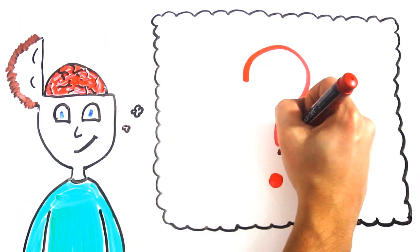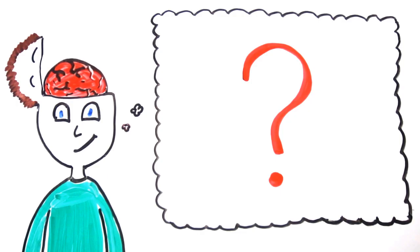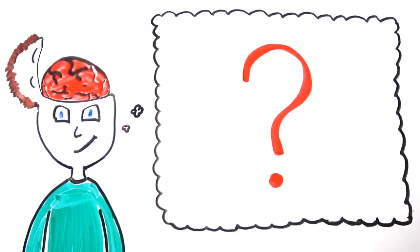But what if I told you that simply thinking could affect not only the way your brain works, but its physical shape and structure as well? It turns out, this is exactly what happens.